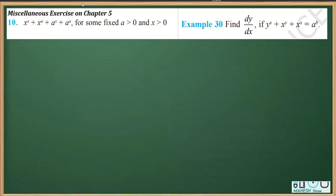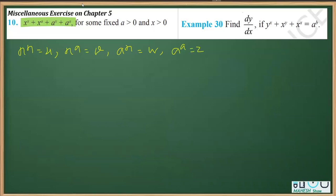Let's begin by solving the first one. We are going to consider this function — let's say x raised to the power x as u, x raised to the power a as v, a raised to the power x as w, and a raised to the power a as z. Considering the whole expression to be y, we can write: y = u + v + w + z.